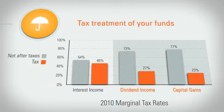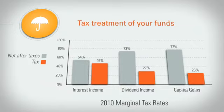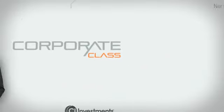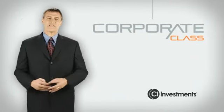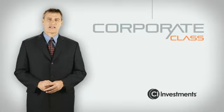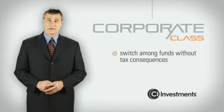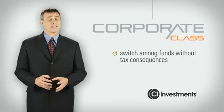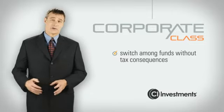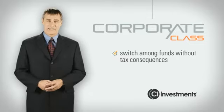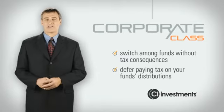both of which receive preferential treatment in comparison to regular interest income. In contrast, a mutual fund trust pays out all its income annually and can also pay out interest income, which attracts the highest level of tax. The Corporate Class provides many of the investment benefits that are found in an RSP, such as the ability to switch among funds without tax consequences, so you can rebalance to lock in investment gains,